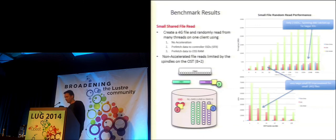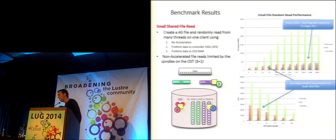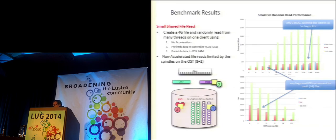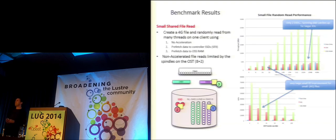Another question, building on the previous: rather than integrating with the batch scheduler, what about policy-based smarts using information already in the file system — for example, if one file in a directory is touched, automatically promote all files smaller than some threshold into cache? Speaker confirms this could fit within the framework, noting his thinking has been focused on schedulers given his background, and asks how the questioner would determine the policy in their ideal world.